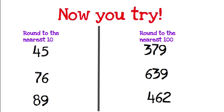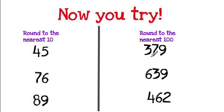Now you try. See if you can round these numbers to the nearest 10, and these to the nearest 100. You would underline the number in the 10s spot, circle the number next door — 5 or more, let it soar; 4 or less, let it rest. Same thing for the 100s: underline the 100s, circle next door, and then change the last two digits into 0s. Go ahead, give it a try.